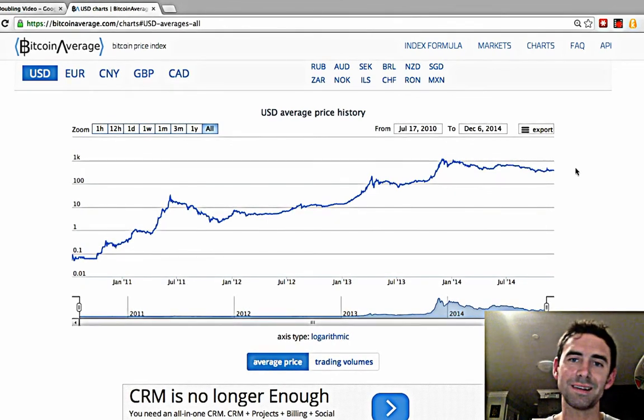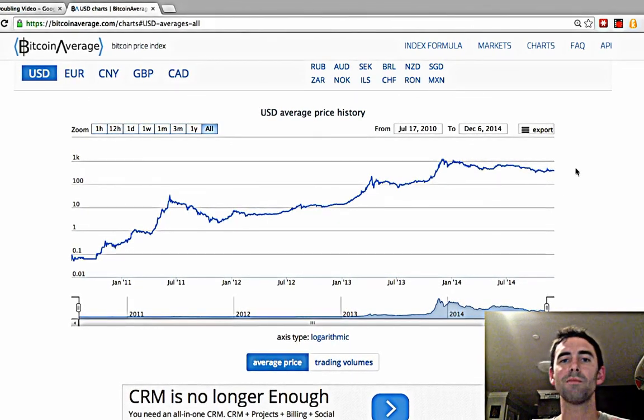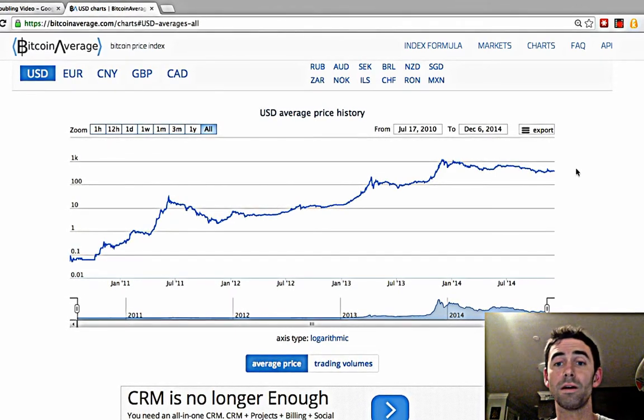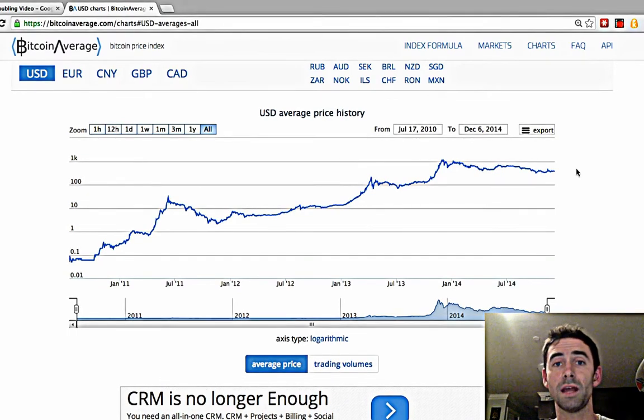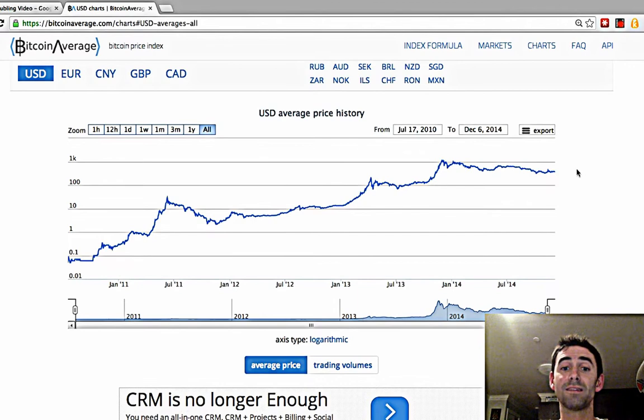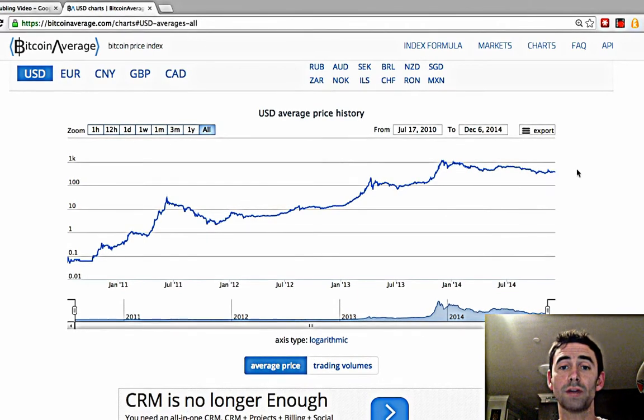Of course it's not going to be exactly straight because the price of Bitcoin is susceptible to human greed and fear, so there's little bubbles and bursts, but on a trend it's clearly on an exponential trend.